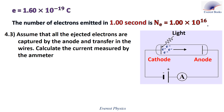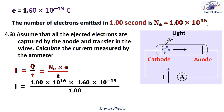Part 4.3: assume that all the ejected electrons are captured by the anode and transferred in the wires. Calculate the current measured by the ammeter. The expression for constant current is Q over T, where Q equals N times e, with e being the electron charge and N the number of electrons crossing the wire during time T. Plugging in the numbers gives a current of 1.60 times 10 to the power minus 3 amperes.